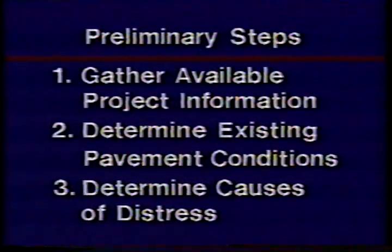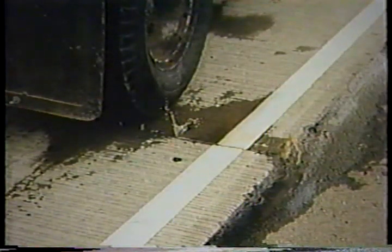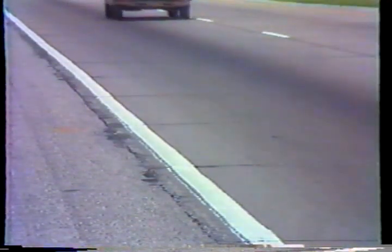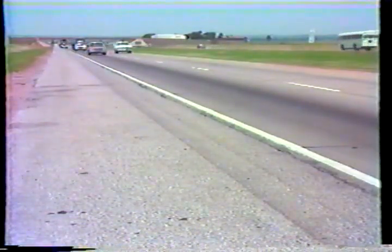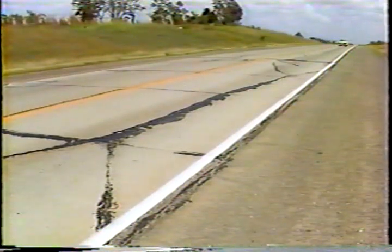While steps one and two are fairly self-explanatory, step three is perhaps the most difficult and challenging. One common cause of pavement distress is the displacement of support material from beneath the concrete slabs. Water — either ground water or surface water seeping through joints or cracks — tends to weaken and erode the foundation soil. Heavy traffic passing over the pavement causes a pumping action which accelerates the process. The loss or displacement of support material from beneath the slabs causes a stair-step effect called faulting on the pavement surface. Faulting most often occurs at transverse joints and is associated with a loss of load transfer across the joints. Severe loss of foundation soil can lead to cracking of individual slabs, either at the corners or running the entire length of the slab.